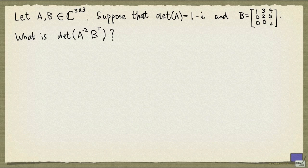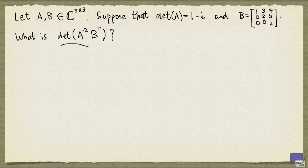Notice that we are not given the matrix A — we are only given the determinant of A. And here we have to calculate the determinant of this product, so we have to somehow write this in terms of the determinant of A times some other stuff.